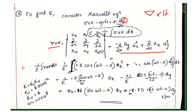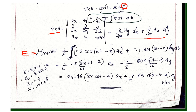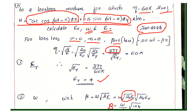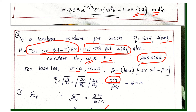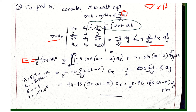So, E is equal to 1 by epsilon integral del cross H dt, specifically 1 by epsilon integral of the hy term in the ax direction, with respect to dt. The sin term differentiates to cos. After integration with respect to dt, cos integrates back to sin divided by omega, giving a factor of ax. Similarly, the cos term gives sin of omega t minus z divided by omega.